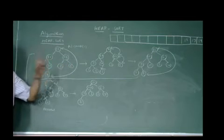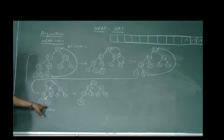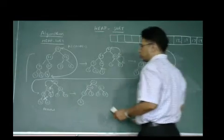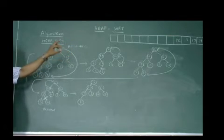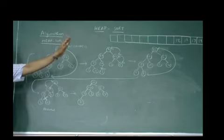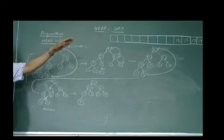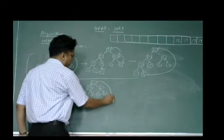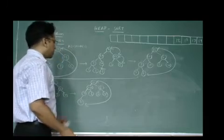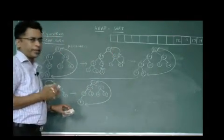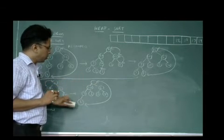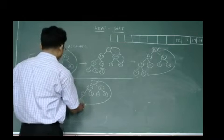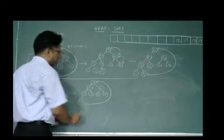In each iteration, one element is being removed from the heap and placed in the output array. The elements are arranging themselves in descending order in the output array. Again we repeat the procedure: 5 is swapped with 11, 11 is removed and placed in the sorted array, and the heap size is reduced by one.